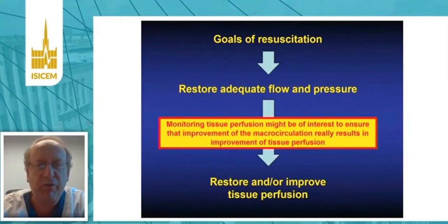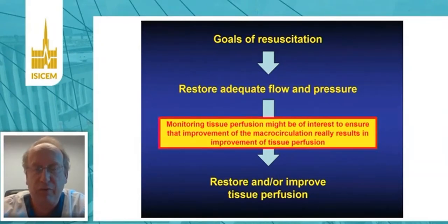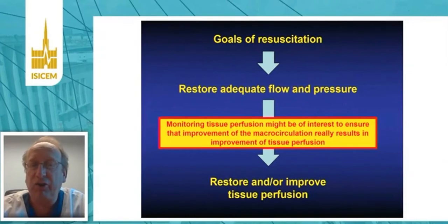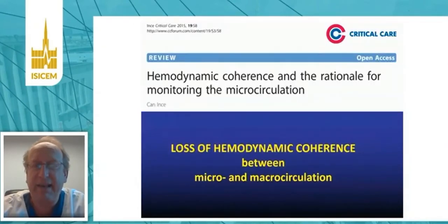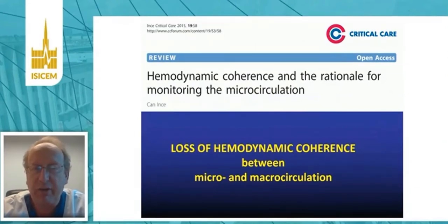Monitoring tissue perfusion might be of interest in this context to ensure that improvement of the macrocirculation really results in improvement of tissue perfusion. In critically ill patients, this is clearly not always the case. This has been developed into a concept named the loss of hemodynamic coherence — loss of hemodynamic coherence between micro and macrocirculation.